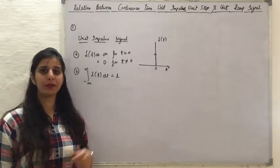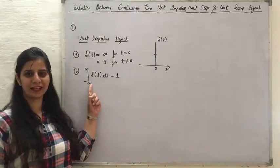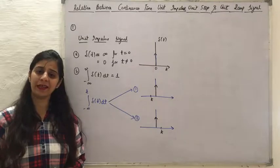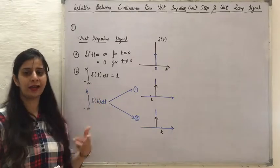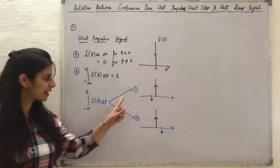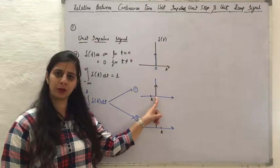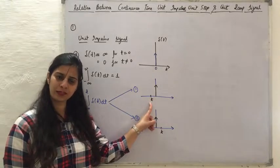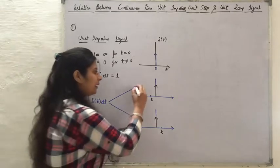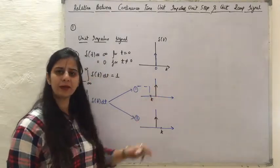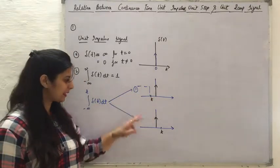To derive a relationship between the unit impulse and unit step signal, let us put a limit on this integration. We integrate it from minus infinity to t. There are two possible cases. The first case is when t is lying to the left of t equal to 0, meaning the integration does not include the unit impulse signal, so the integration result will be 0.